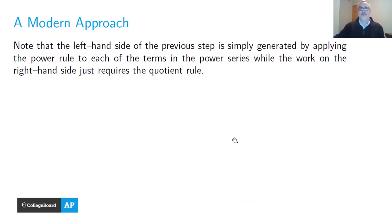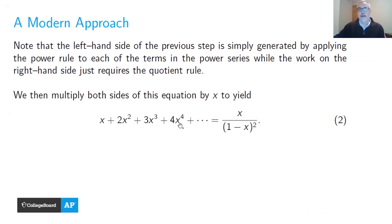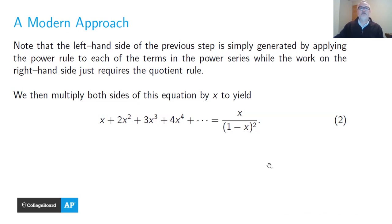Now I'm going to multiply both sides of this equation by x. Distributing x across all terms on the left-hand side, and placing x in the numerator on the right gives x/(1−x)². I'll call that equation 2. Notice that the exponents on the left-hand side are now exactly the same as the coefficients in front of each term — that's an important fact we'll use shortly. The interval of convergence hasn't changed.